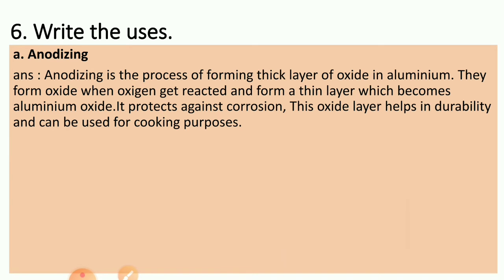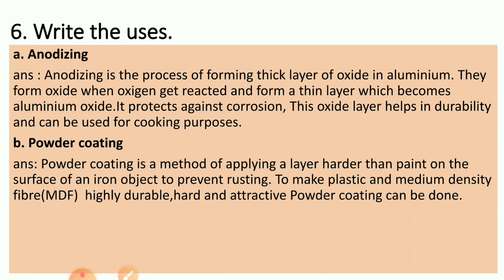Write the uses. Anodizing: anodizing is a process of forming a thick layer of oxide on aluminium. Oxygen reacts to form a thin layer of aluminium oxide, which protects against corrosion. This oxide layer helps in durability and can be used for cooking purposes.